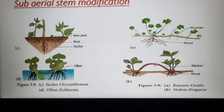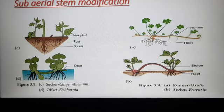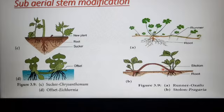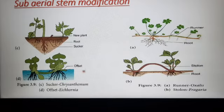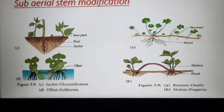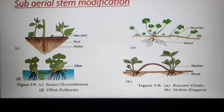Now, the stolon. It is like a weak cylindrical lateral branch that arises from the base of the stem. It bends downwards and swells, and where it touches the ground, adventitious roots are formed and a new plant is produced. The next one is offset. These are just like a runner, but different — thicker and shorter. They are mostly aquatic. These are all sub-aerial stem modifications.